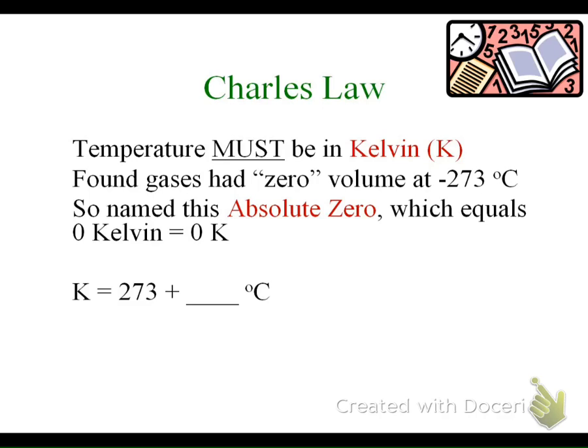To convert to Kelvin, we add 273 to the degrees Celsius. To go from Kelvin to degrees Celsius, we subtract 273. You will need to know these, so please make sure that you commit this to memory.